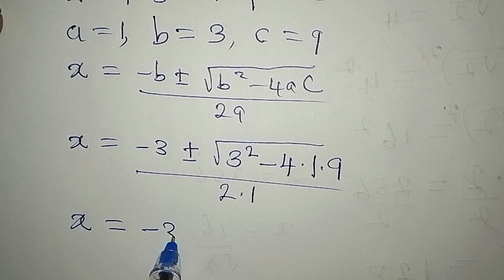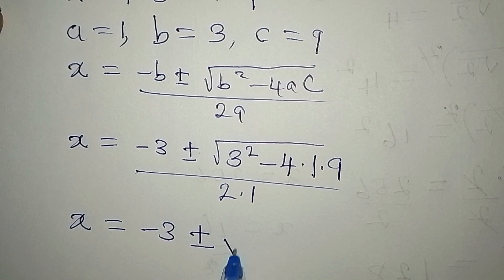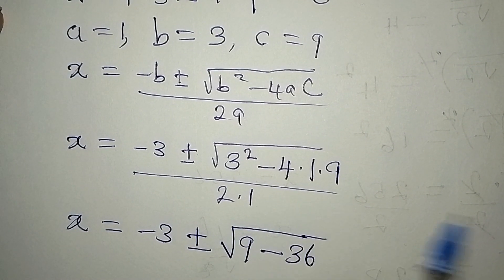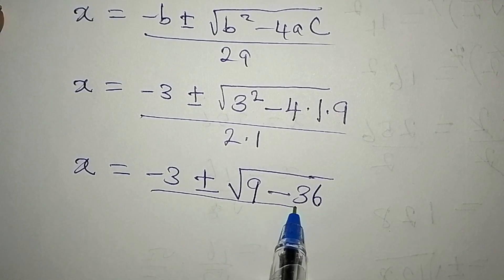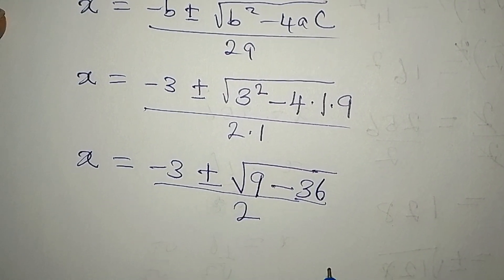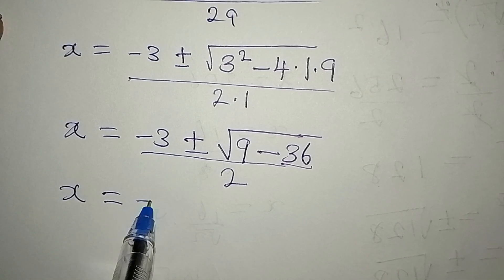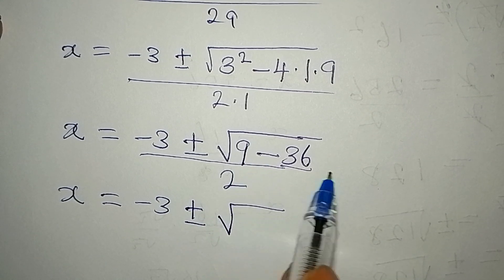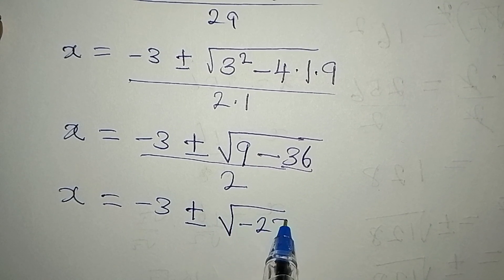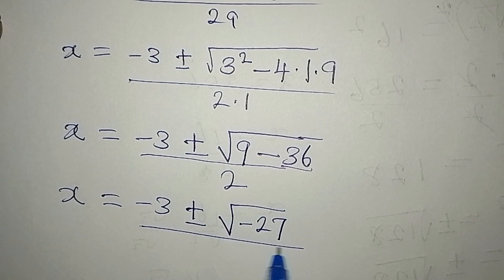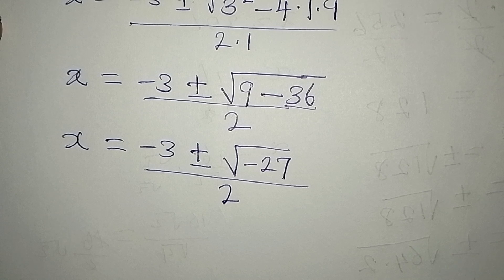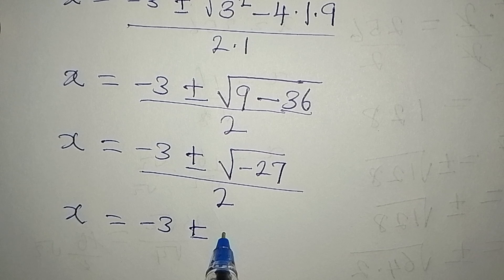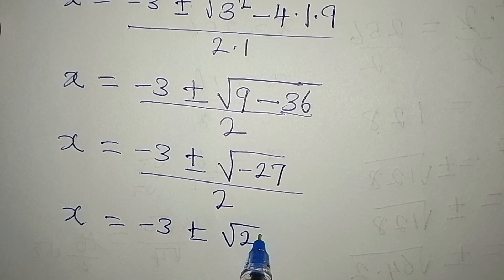So x equals negative 3 plus or minus square root of 9 minus 36, over 2. Taking 9 minus 36 gives negative 27, so we have x equals negative 3 plus or minus square root of negative 27, divided by 2.